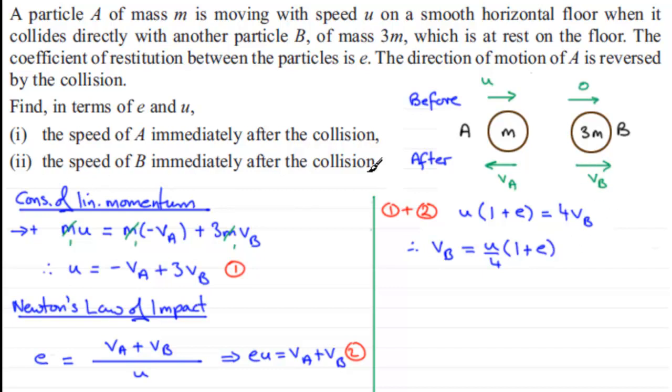OK, we've got part two first. It doesn't matter. We can go on to get A, just by simply substituting this value into one of the other equations. I'm going to pick equation 1, subbing into 1. And if we do that, what we've got is that, therefore, u equals minus VA. And then we've plus 3 times VB. So, that's going to be 3u over 4 multiplied by 1 plus e.